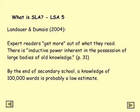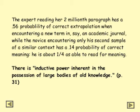Latent semantic analysis also explains why expert readers get more out of what they read. There is inductive power inherent in the possession of large bodies of old knowledge — that is, knowledge previously acquired. By the end of secondary school, a knowledge of 100,000 words is probably a low estimate. The expert reading her two-millionth paragraph has a .56 probability of correct extrapolation when encountering a new term in, say, an academic journal, while the novice encountering only his second sample of a similar context has a .14 probability of correct meaning — about a quarter as able to read for meaning.